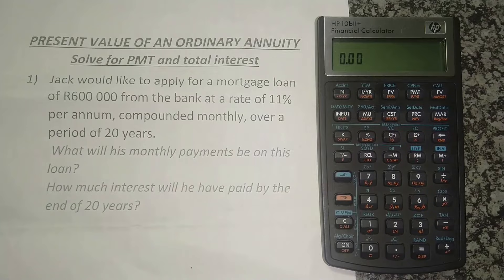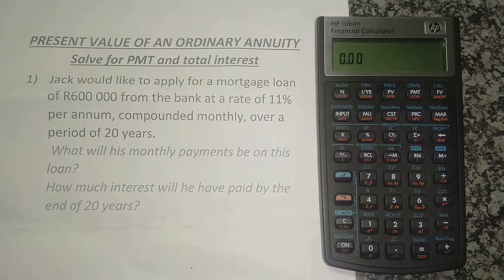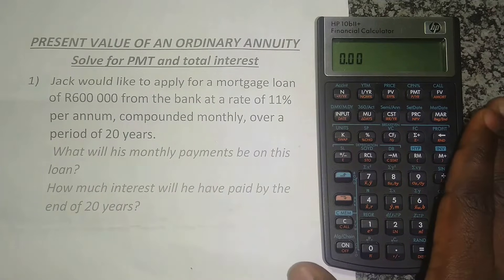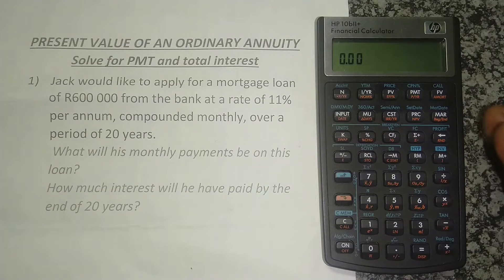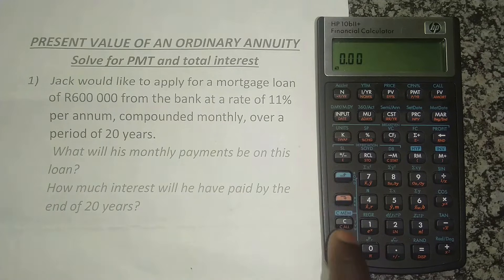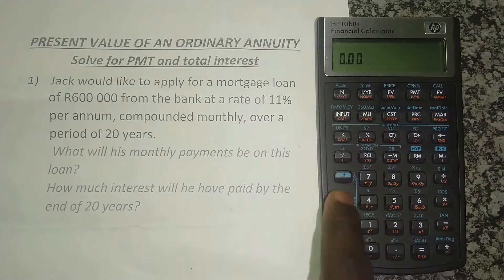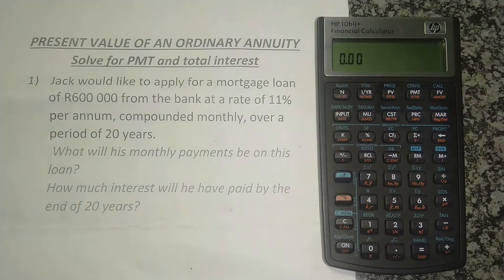He wants a mortgage loan and we know he'll be paying monthly at a rate of 11% per annum, compounded monthly. Now, you have to know how many compoundings your calculator is set to. This calculator, by default, is compounded 12 times per annum — in other words, compounded monthly. Press the orange arrow and then C (clear all) and you can see it shows 12 compoundings per year. So we are good.